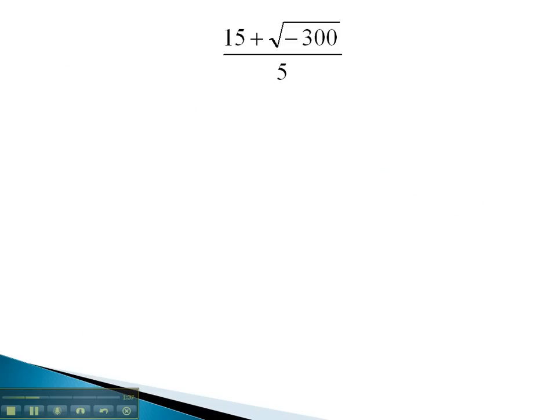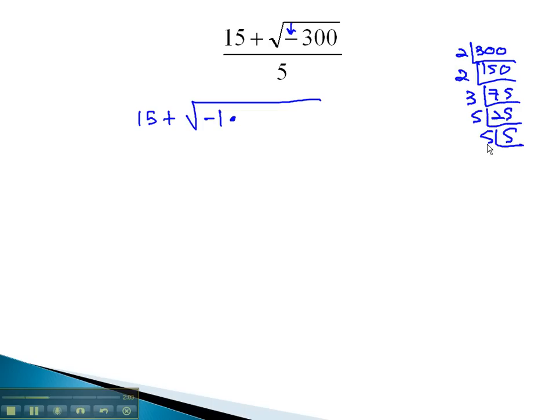In this problem, we're going to simplify the radical first by finding the prime factorization of 300. Notice the negative in there is just going to be represented with a factor of negative 1. Prime factorization of 300 by dividing by 2, 150 times 2, 75 times 3, 25 times 5, 5 times, and 5 once, tells us the 300 is 2 squared times 3 times 5 squared, all over 5.